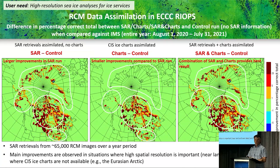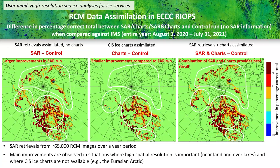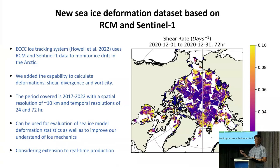Verification shows improvement in percentage correct total in the system with the SAR analysis versus our control, and also compared to a reference run using sea ice charts. Red areas indicate areas of improvement. Using the SAR data gives significant improvements throughout the Arctic and around Alaska, whereas the benefit of the ice charts is more in the regional Canadian waters where the ice service concentrates their effort. The maximum benefit is obtained when we put the two together - a nice demonstration that SAR data has a significant impact and can extend the benefits seen from the charts over the full Arctic.